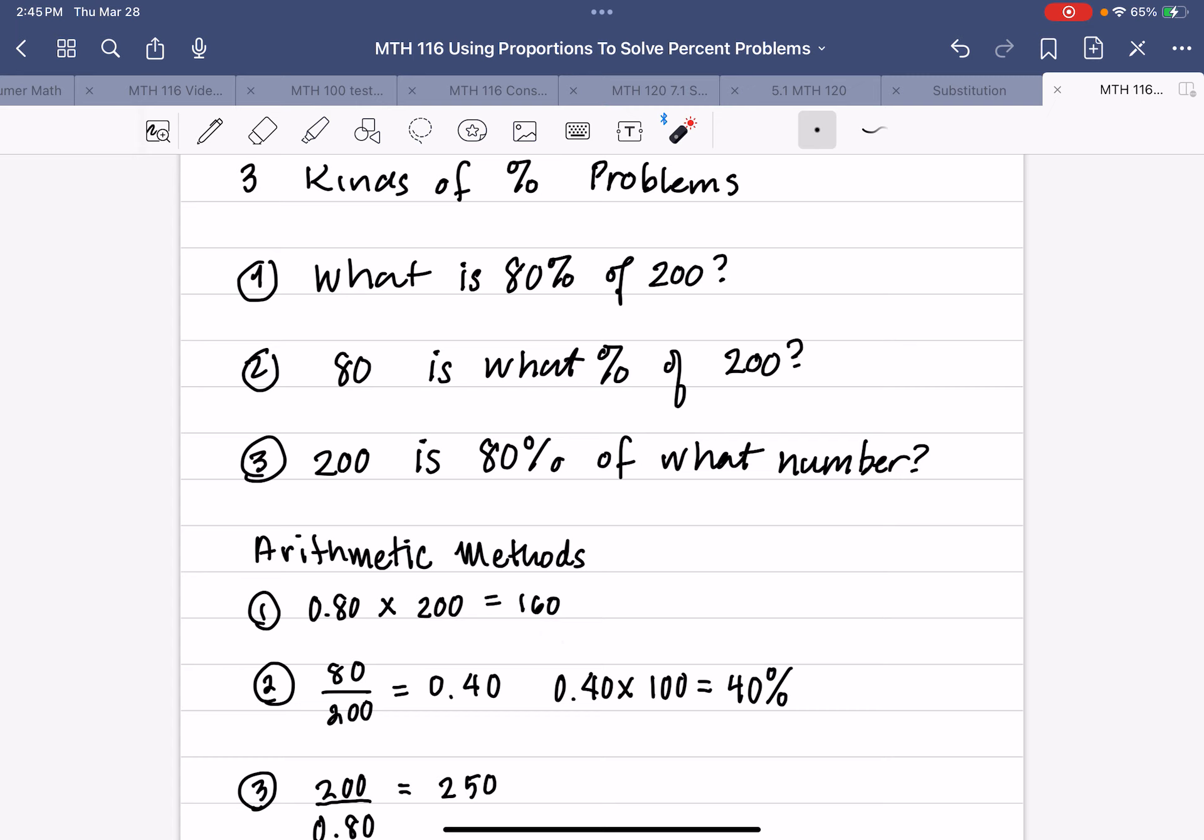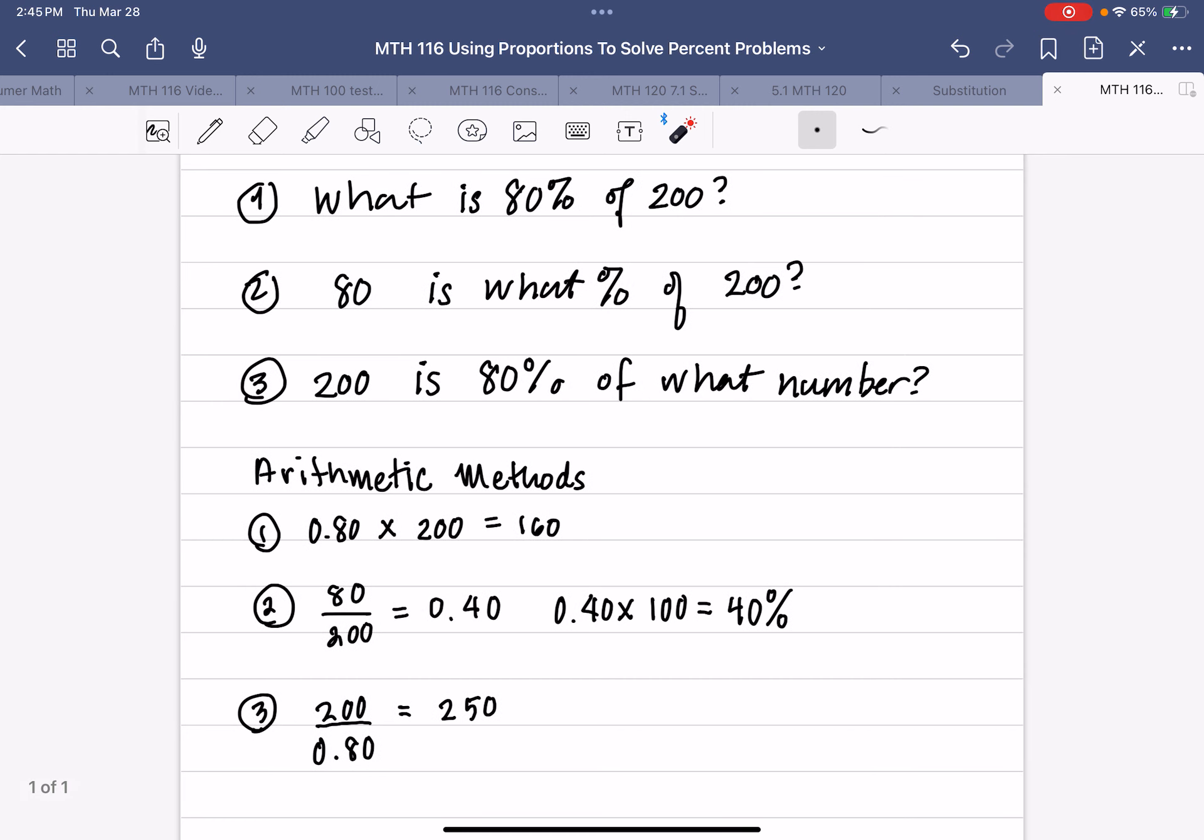If I want to find 80 is what percent of 200, I have to do 80 divided by 200, get the decimal 0.40, multiply by 100 to get 40%. And the third way, 200 is 80% of what number would be 200 divided by 0.80 is 250.